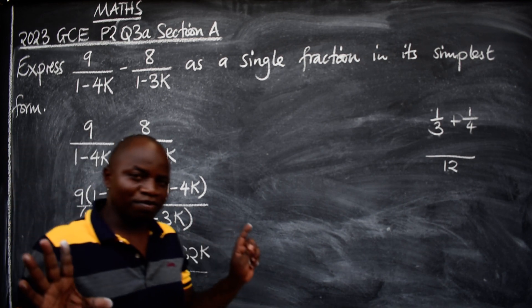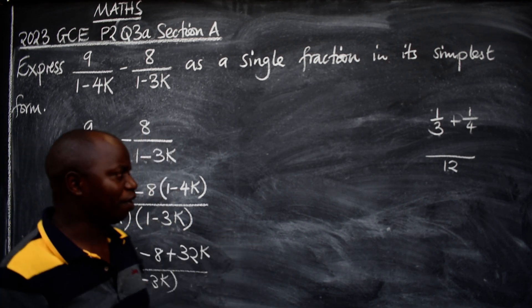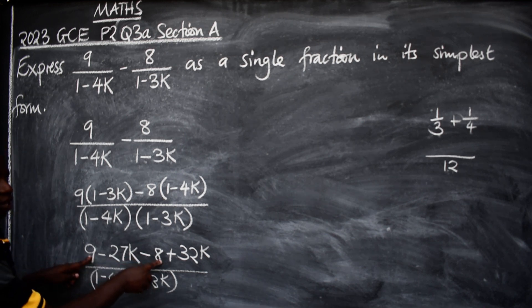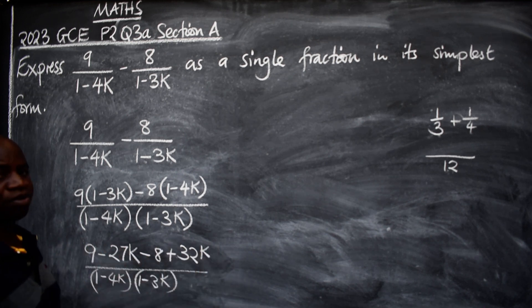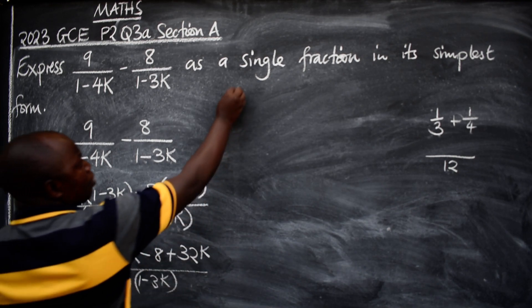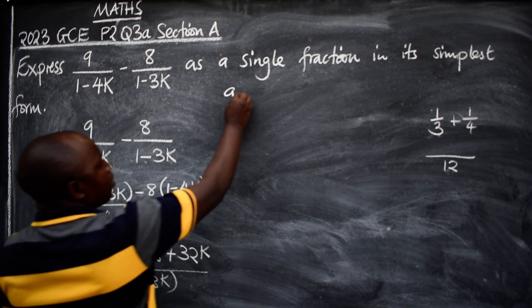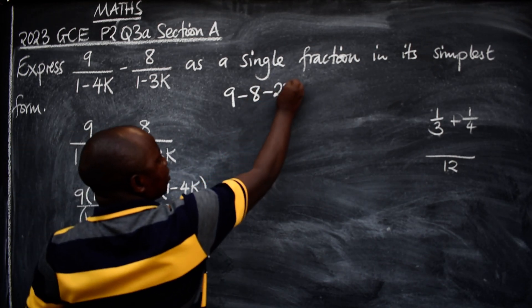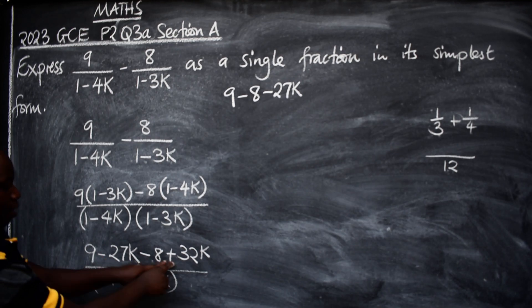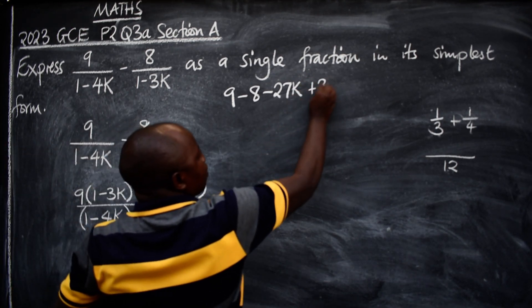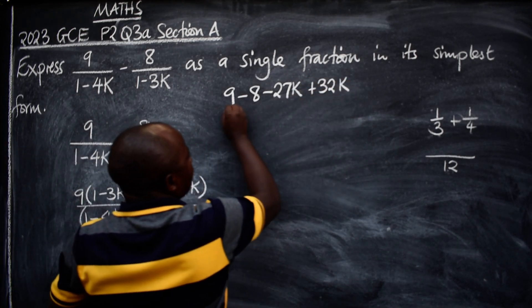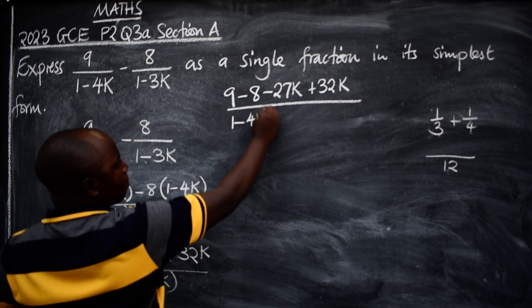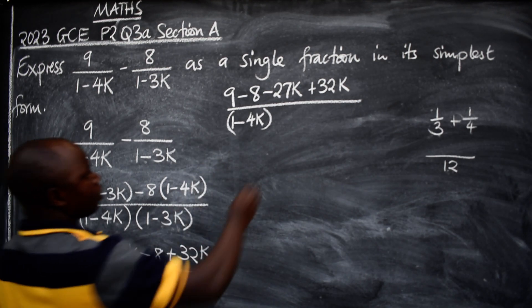What next? Simplify the numerator, the top part. So we have 9 here minus 8, or let's say collection of like terms. So I've got 9, the pair is here minus 8. Then I've got negative 27k here, then plus 32k over the denominator 1 minus 4k, then 1 minus 3k like that.